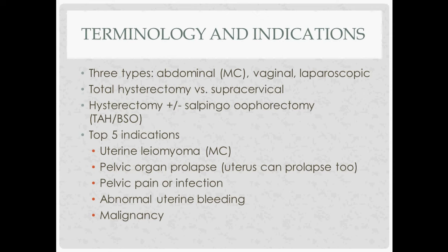Total hysterectomy versus supracervical: total doesn't refer to whether you're taking out the tubes and ovaries. Total means removing the entire uterus including the cervix, whereas supracervical means cutting above the cervix, leaving part of it in. If you're also taking the tubes and ovaries, that's called a total abdominal hysterectomy with bilateral salpingo-oophorectomy.